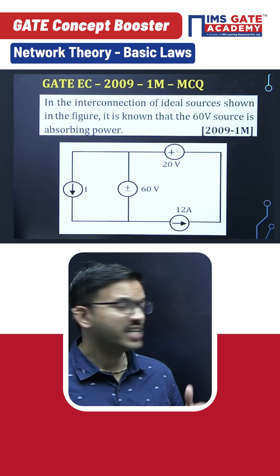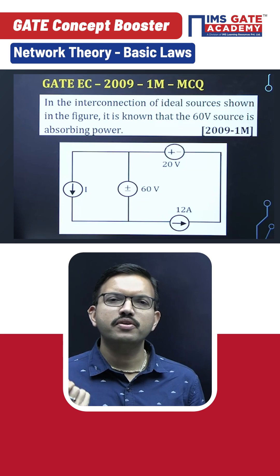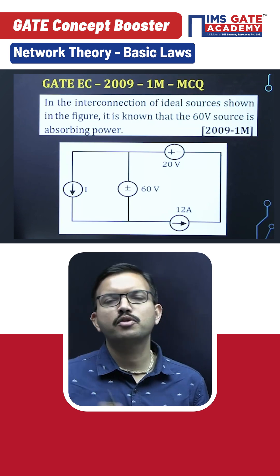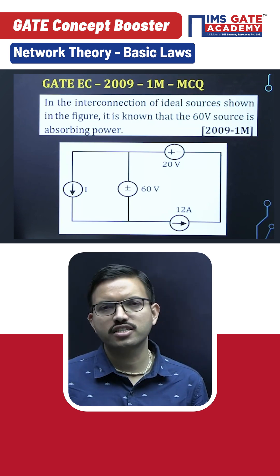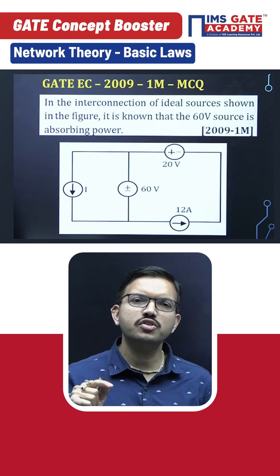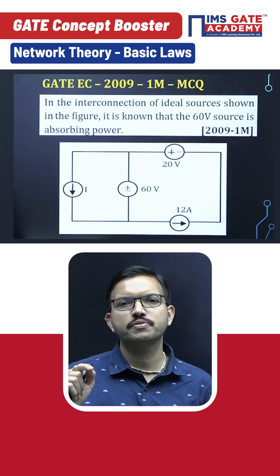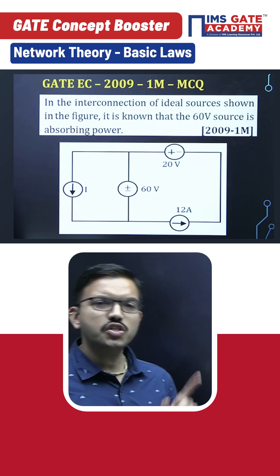Whenever an element is absorbing power, current should enter at the positive terminal of the voltage across it. So that means in this circuit, the current flowing through the 60 volt source should be downward. In order to verify this, you can check option by option regarding i values.